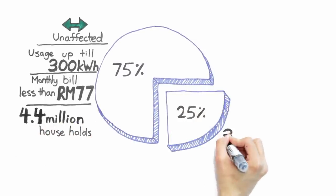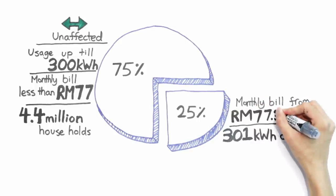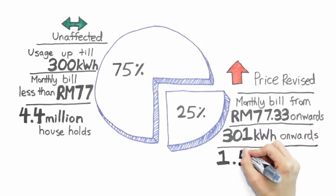The new electricity tariff will only affect the remaining 1.5 million households whose monthly electricity bills amount to more than 77 ringgit.